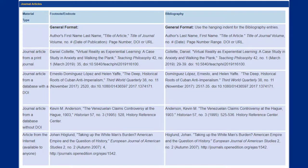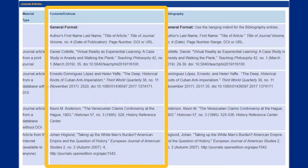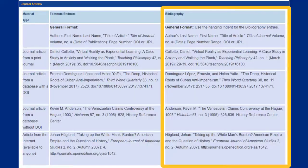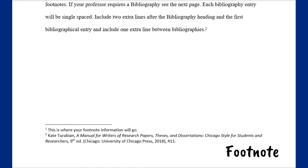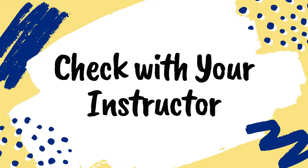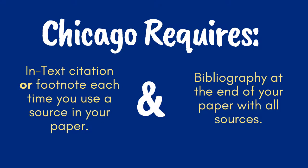You'll notice that there are two types of reference examples: the footnote or endnote, and the bibliography. This is because Chicago style allows for a traditional in-text citation, which uses the author-date style, and footnotes that provide reference information at the bottom of each page. Always check with your instructor to see which style you should use. Each reference requires both an in-text citation or a footnote that signals where you have used outside sources within your paper, and a bibliography that lists all your sources.